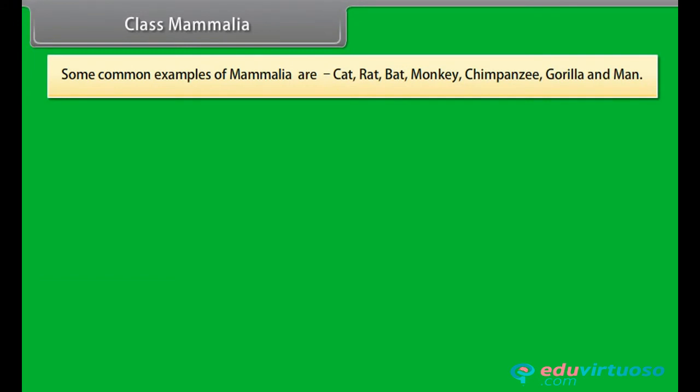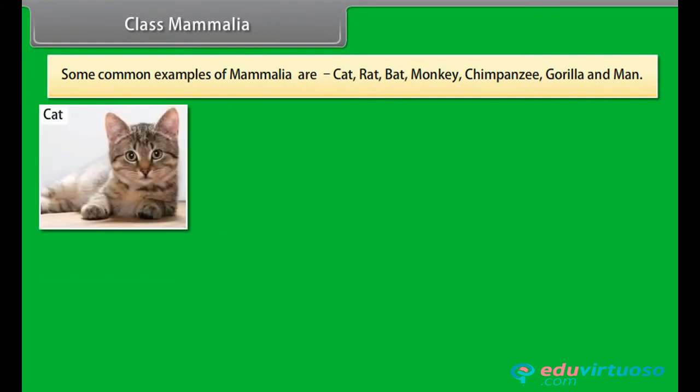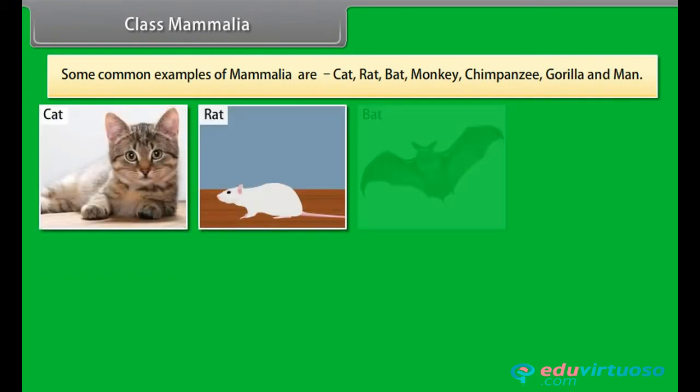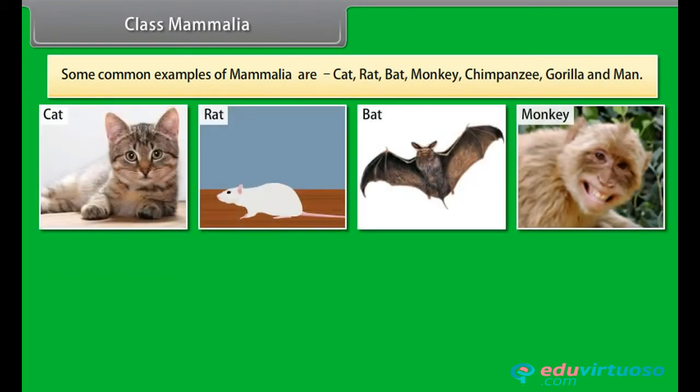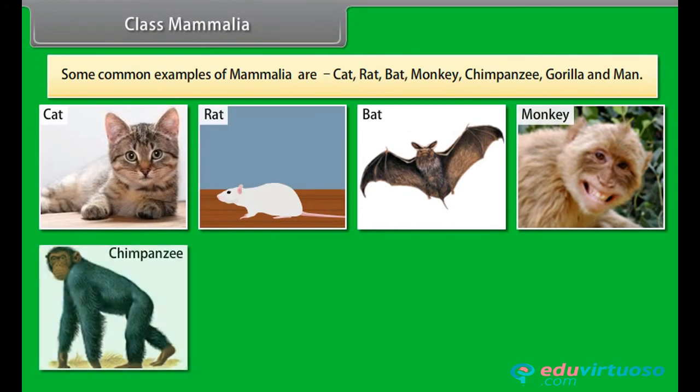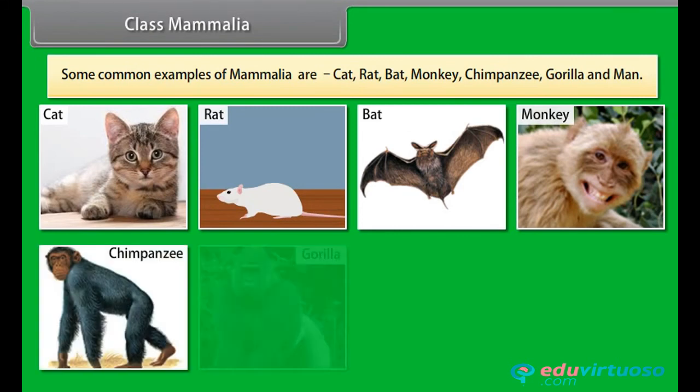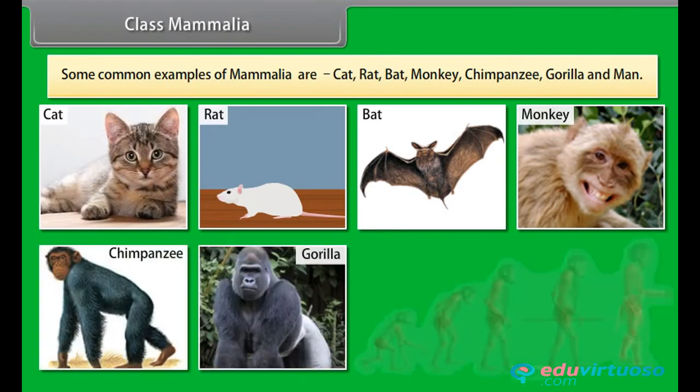Some common examples of Mammalia are Cat, Rat, Bat, Monkey, Chimpanzee, Gorilla, and Man.